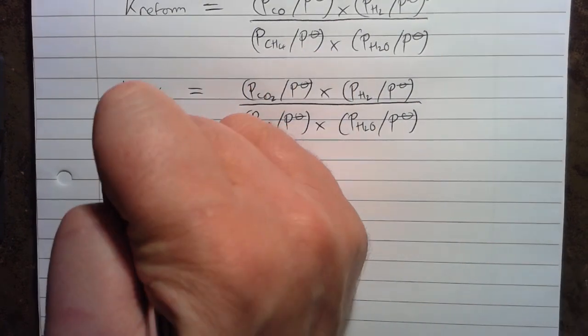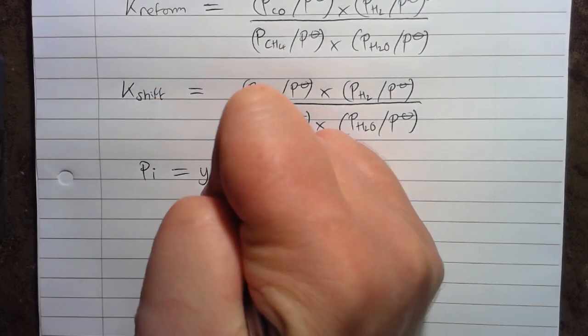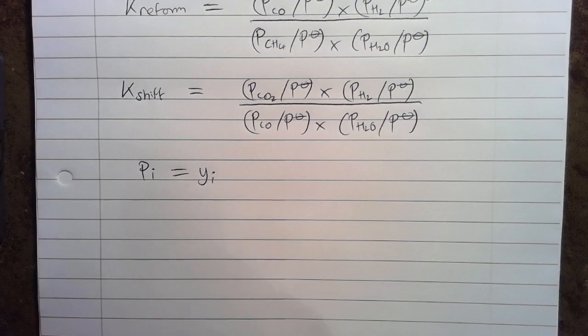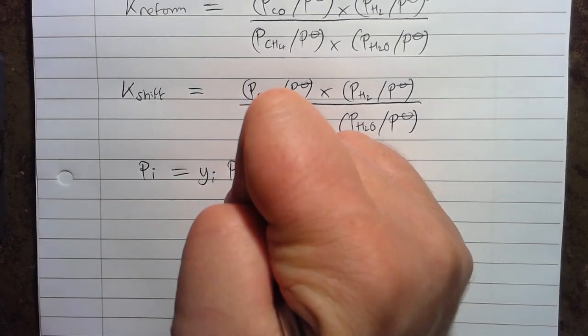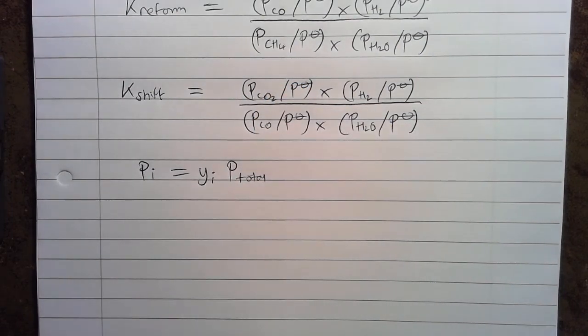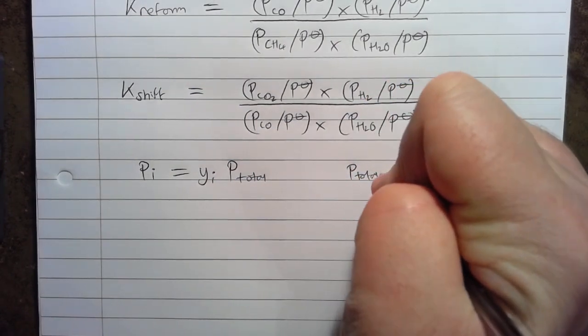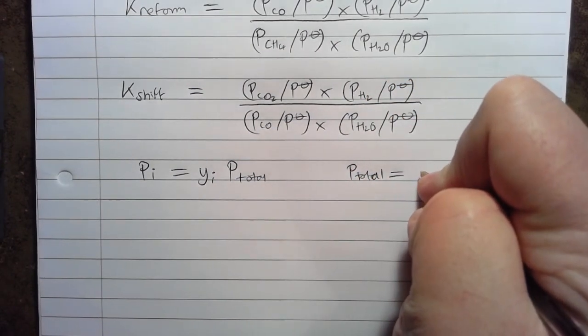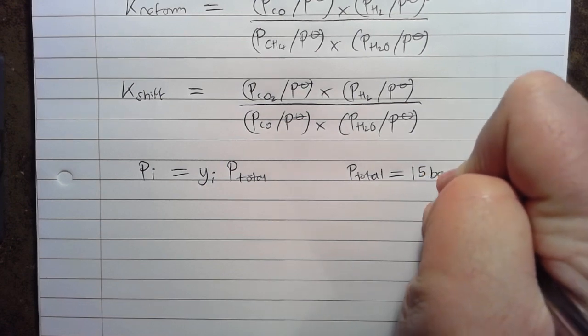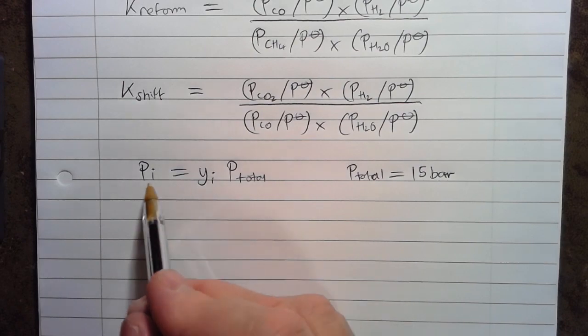So using Dalton's law the partial pressure of a component equals the mole fraction of that component in the gas phase multiplied by the total pressure. Now Dalton's law assumes ideal gas behaviour and the question said to just make that assumption, so P total we know from the problem statement is 15 bar so we can work out for each component in the system the partial pressure.